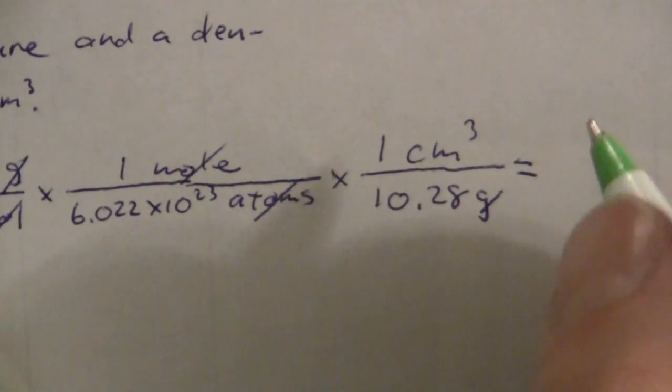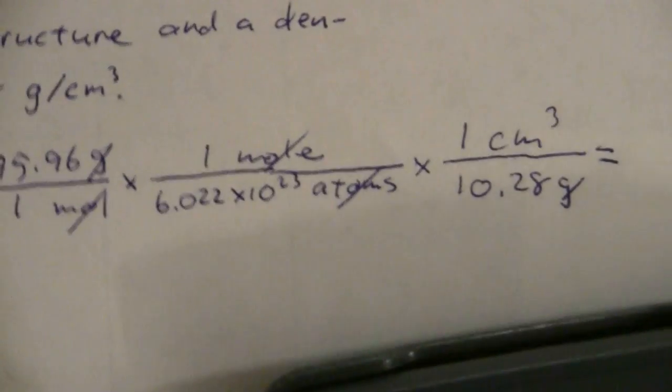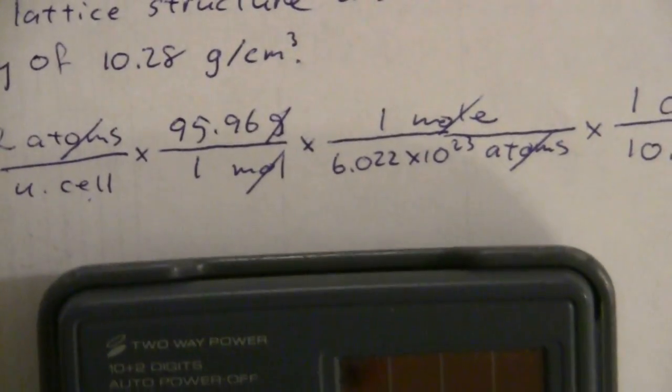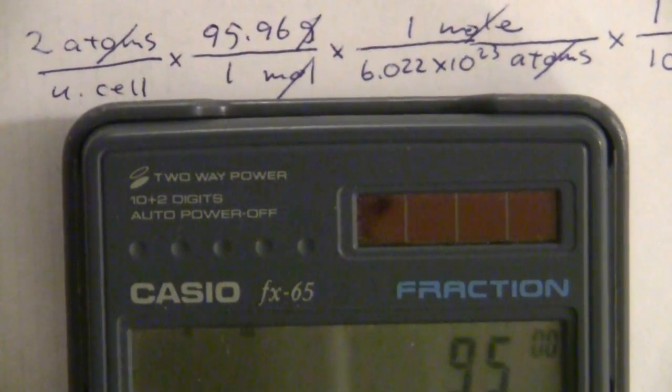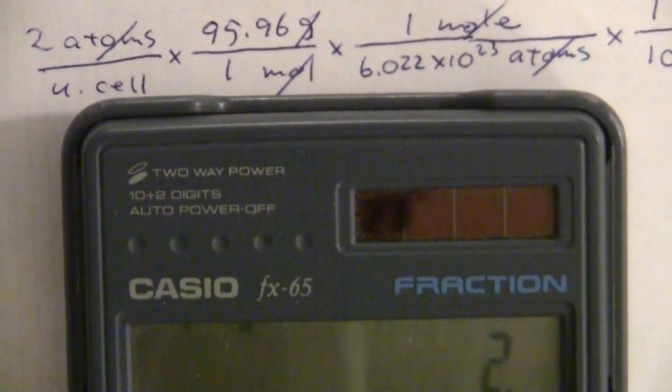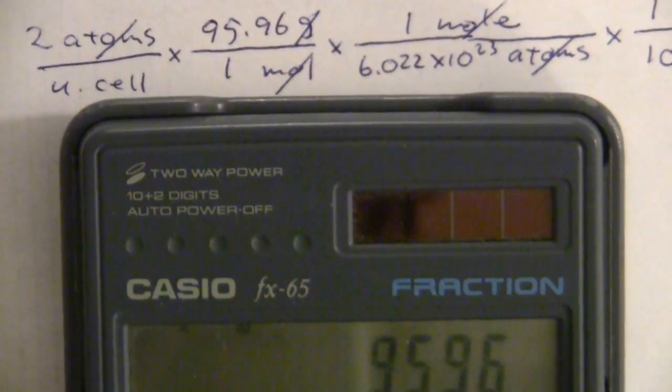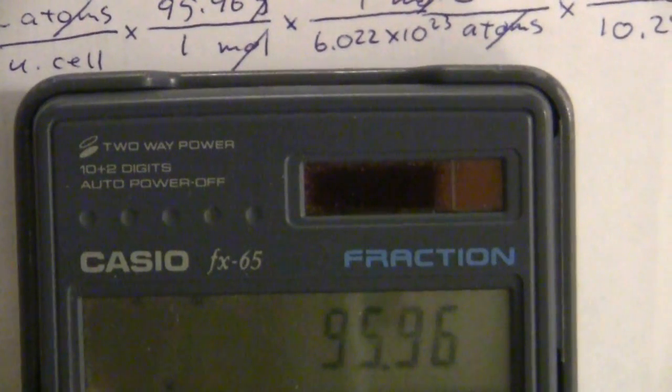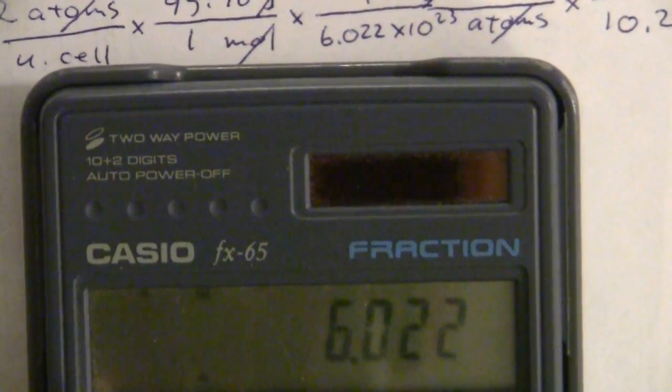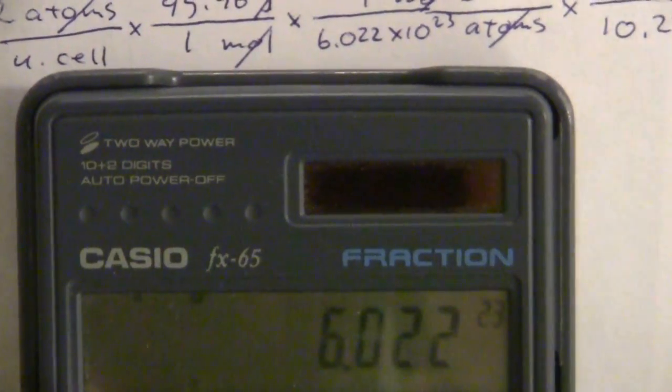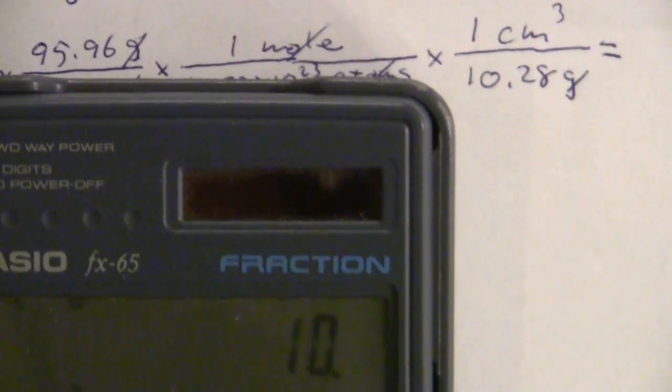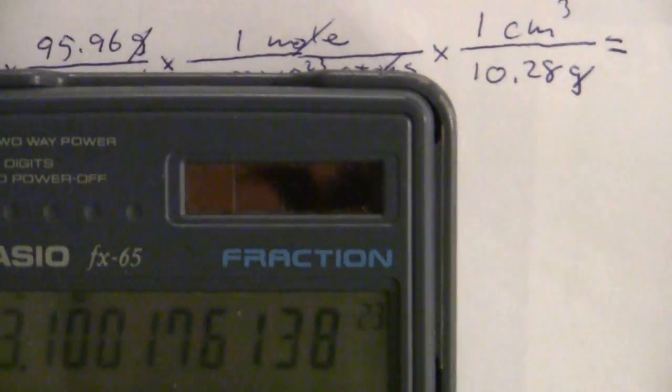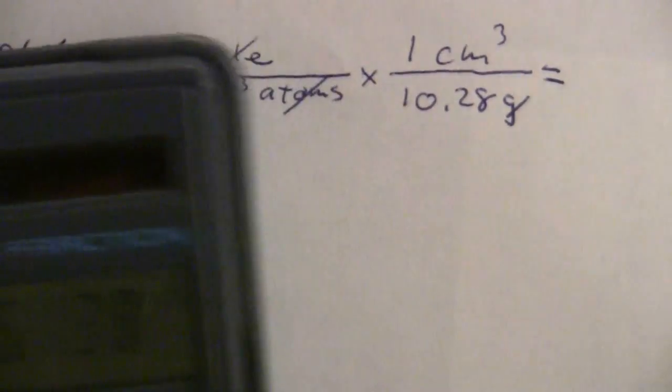So let's go ahead and calculate this. I have 2 times 95.96 divided by 6.022 exponent 23. And then I am going to divide that again by 10.28. And I end up with 3.10 times 10 to the negative 23rd.